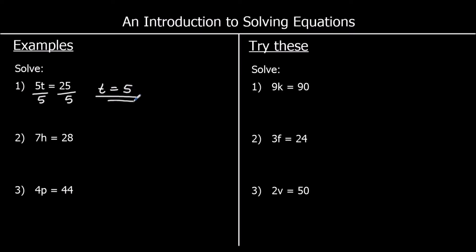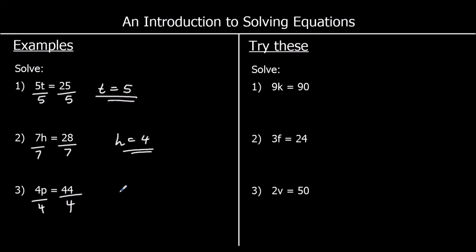For question 2, I'm going to divide both sides by 7 to get h by itself. So h is equal to 28 over 7, which is 4. And for question 3, I'm going to divide both sides by 4 to get p by itself. So 44 over 4 is 11, so p equals 11.